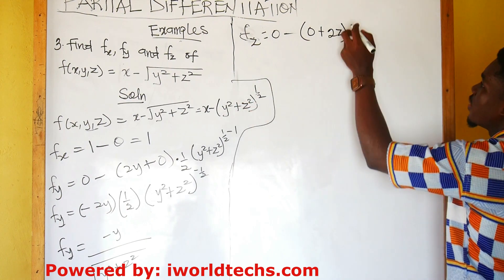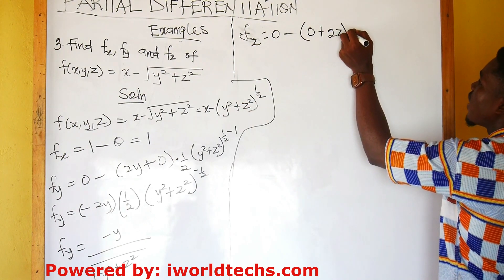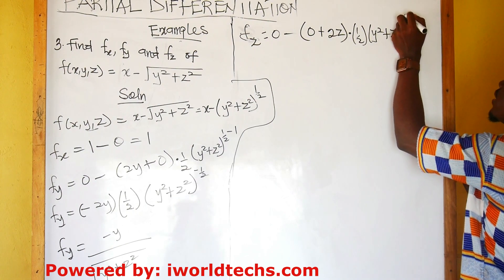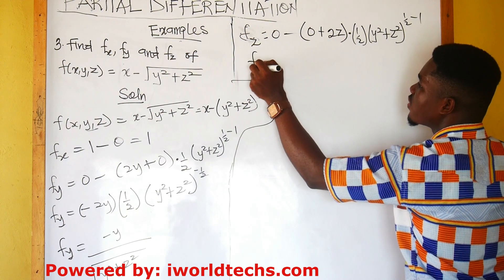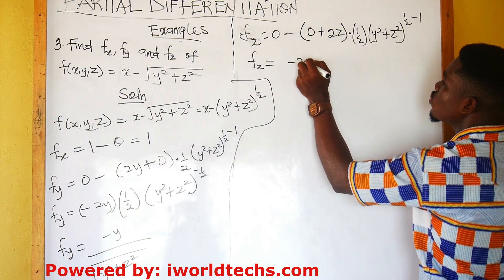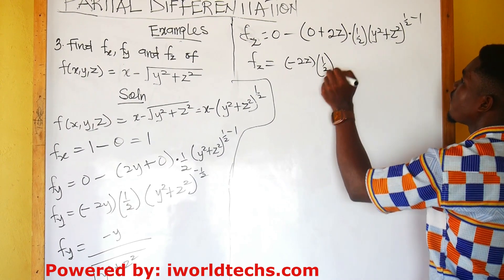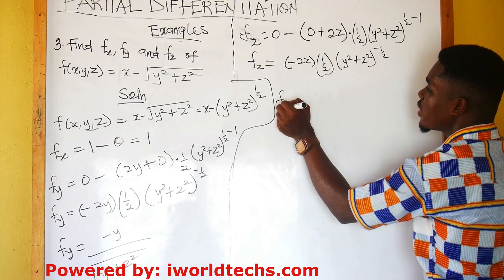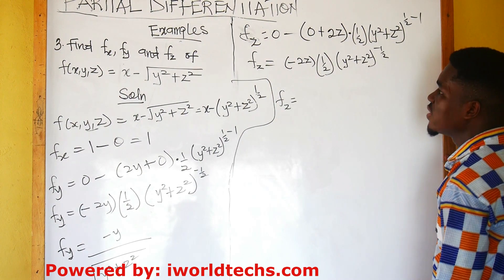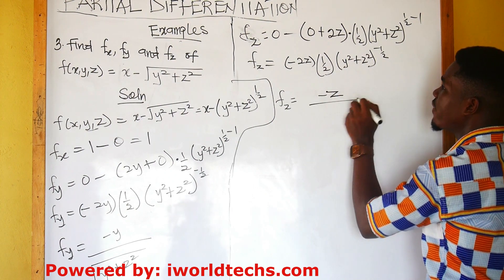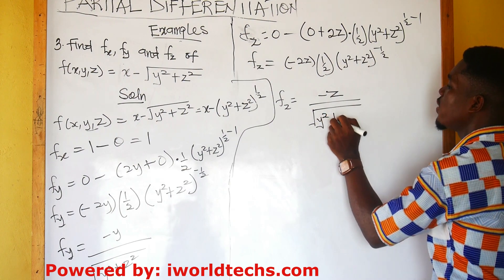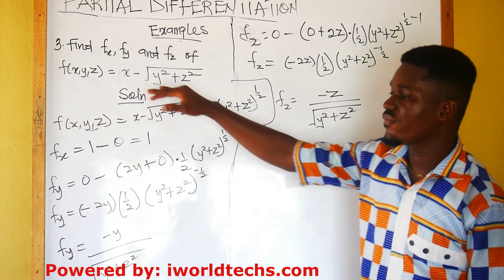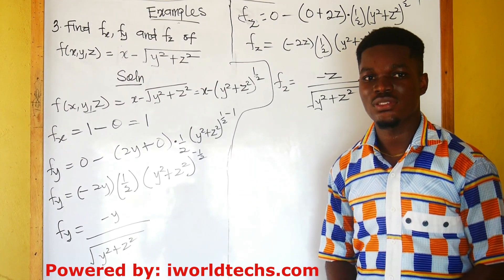Then we differentiate the whole function and multiply by half of y squared plus z squared to the exponent half minus 1. Therefore, the partial derivative with respect to z is negative 2z multiplied by half, times y squared plus z squared to the negative half. So the partial derivative with respect to z is negative z divided by the square root of y squared plus z squared. Here are our partial derivatives of this function with respect to each of the independent variables. Thank you.